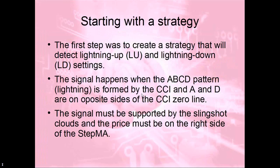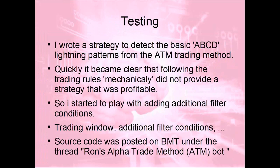I created a NinjaTrader strategy to detect those A, B, C, D patterns and create trading signals. Unfortunately, when I followed it mechanically — just buy, sell, buy, sell — I found that sometimes it worked and sometimes it didn't. So I needed to add filters to make it work: trading hours, other conditions. This is discussed on the BMT forums as the Alpha Trade Method ATM Bot. The strategy was developed step by step, but the problem was that people came up with many ideas to test. With Renko bars, you can't use the built-in strategy testing in NinjaTrader — you need to put your chart and run a replay of the tick data.